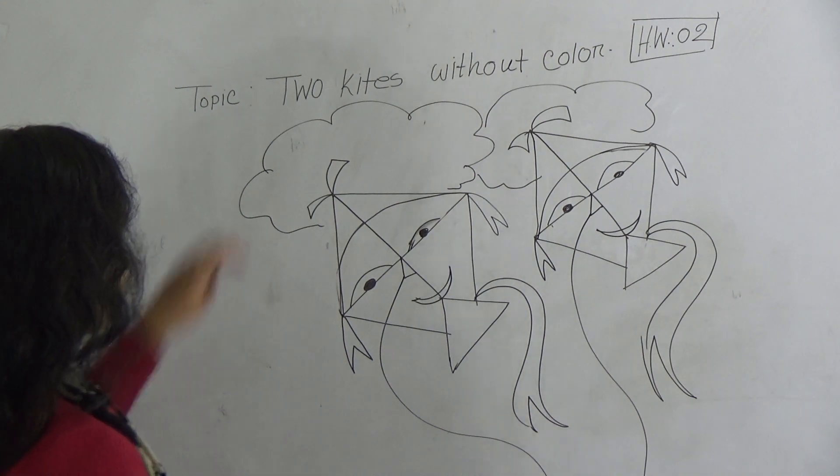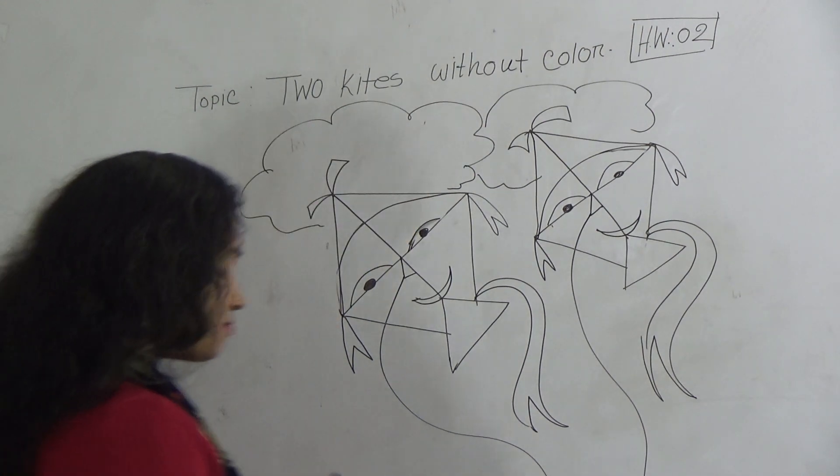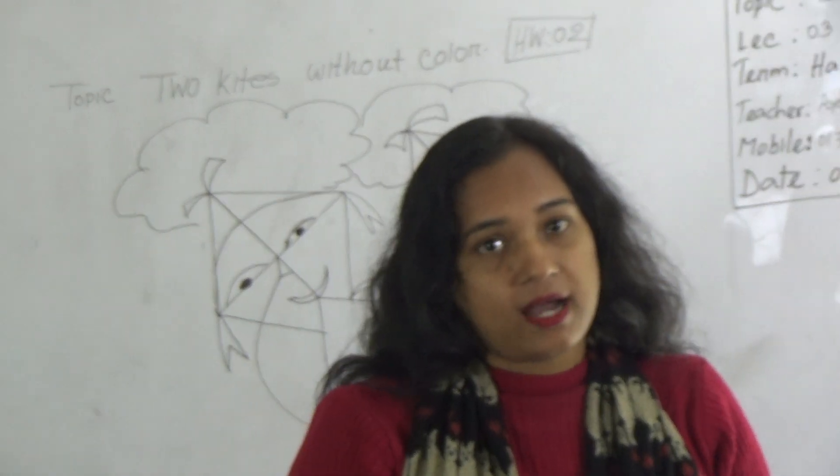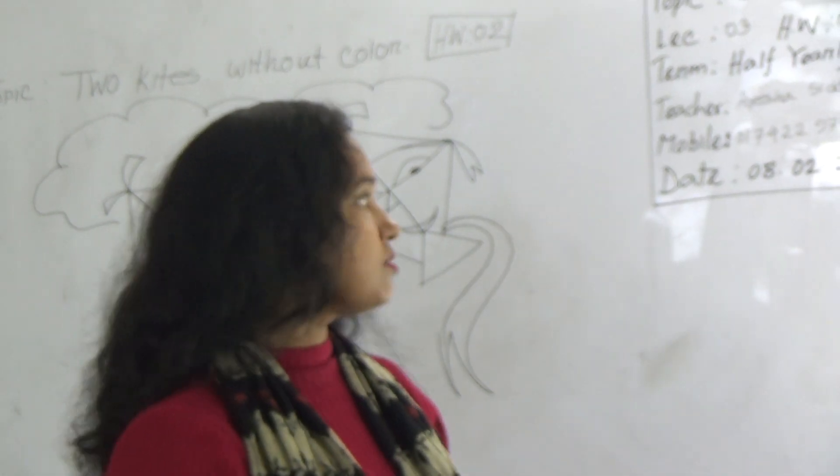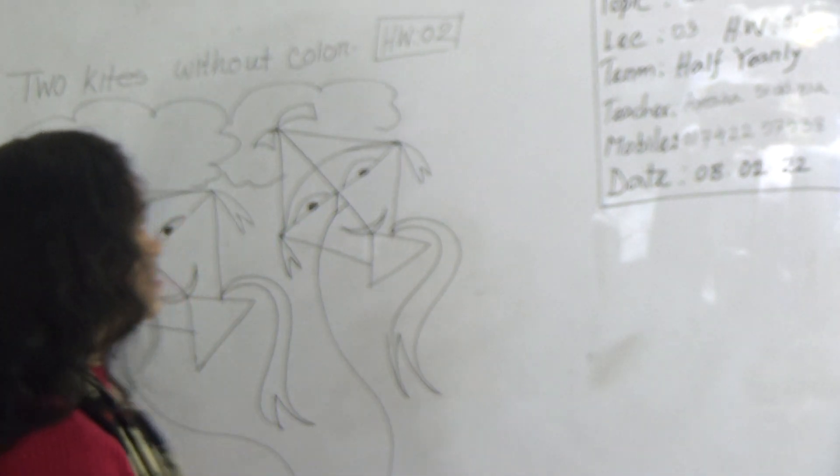This is your two kites drawing. So everyone must practice at your home more and more. Okay? And this one is your HW also. And for HW, everyone must mention the HW number.